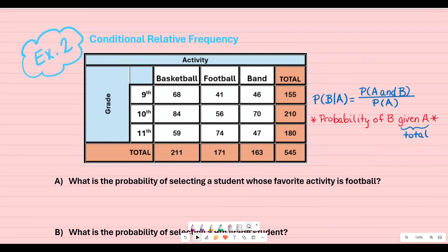Part a says what is the probability of selecting a student whose favorite activity is football? So all of the students, I'm asking all of the students. That's a total of 545 students. But I want to know only the students whose favorite activity is football. So I'm going to go to the football column and I want all of these students. So that means I'm going to look at this total. The total is going to be 171 out of all of the students in the school which is 545.